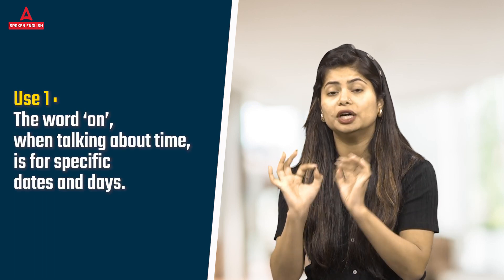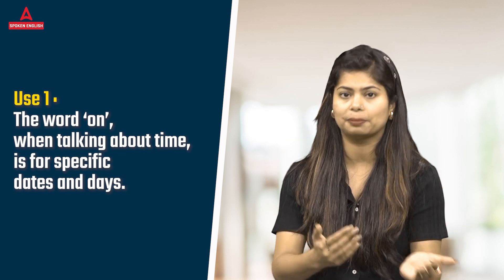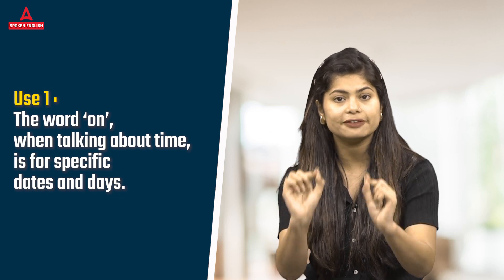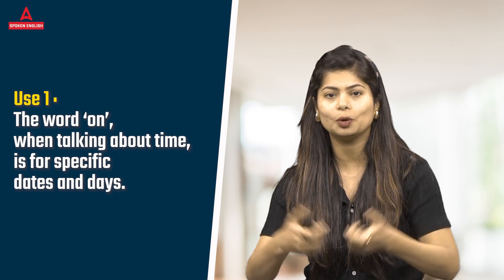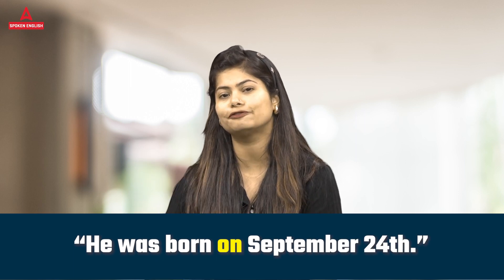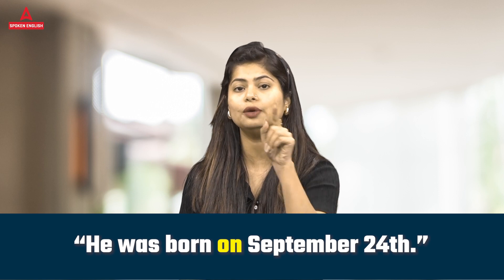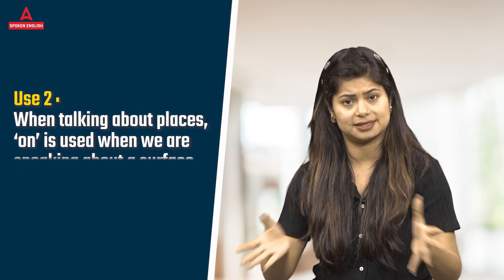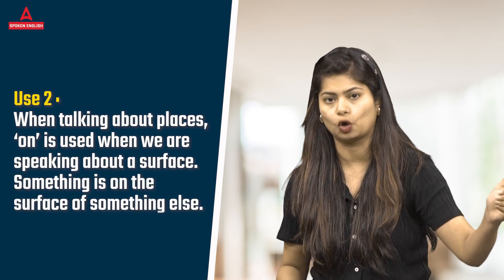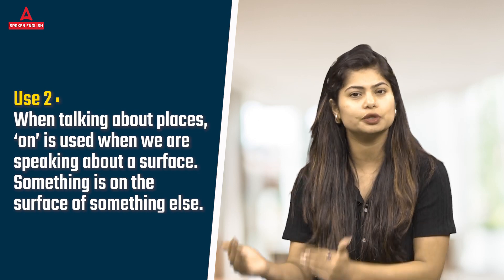When talking about time, the word 'on' is used as a preposition of time for specific dates and days. For example: 'He was born on September 24th' — that is a specific date. 'I go to the gym on Mondays' — that is a specific day. So 'on' is used as a preposition of time for specific days and specific dates like September 24th.